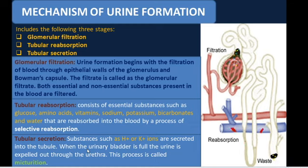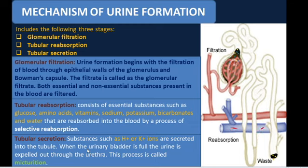The mechanism of urine formation includes three stages: glomerular filtration, tubular reabsorption, and tubular secretion. These are the three stages which take place in the nephron, and we will see what kind of filtration is going on at each stage.